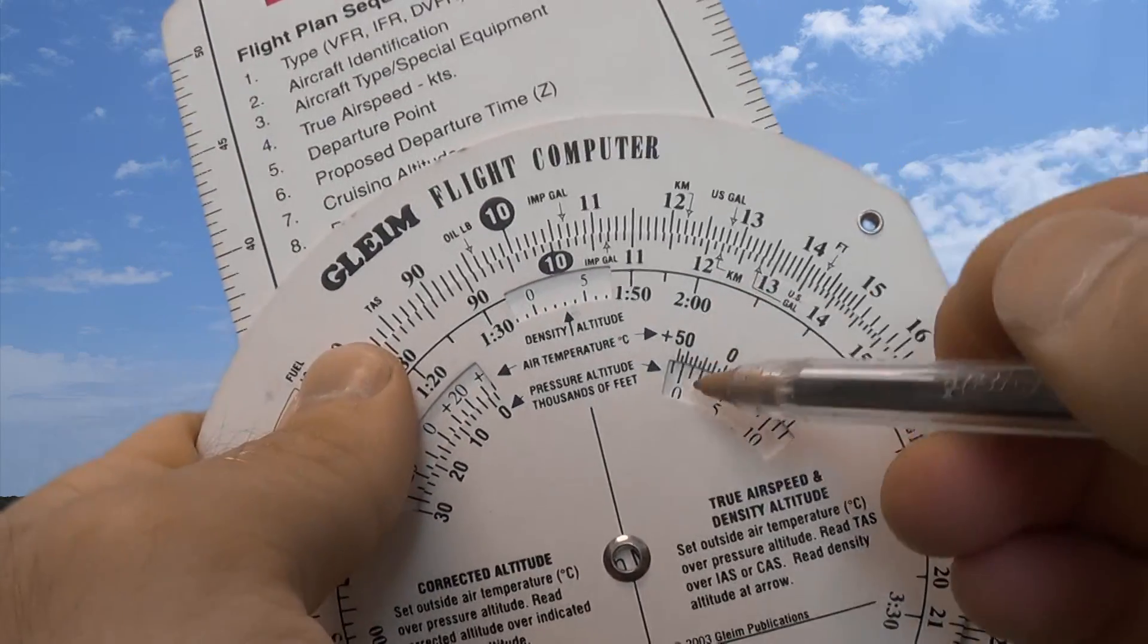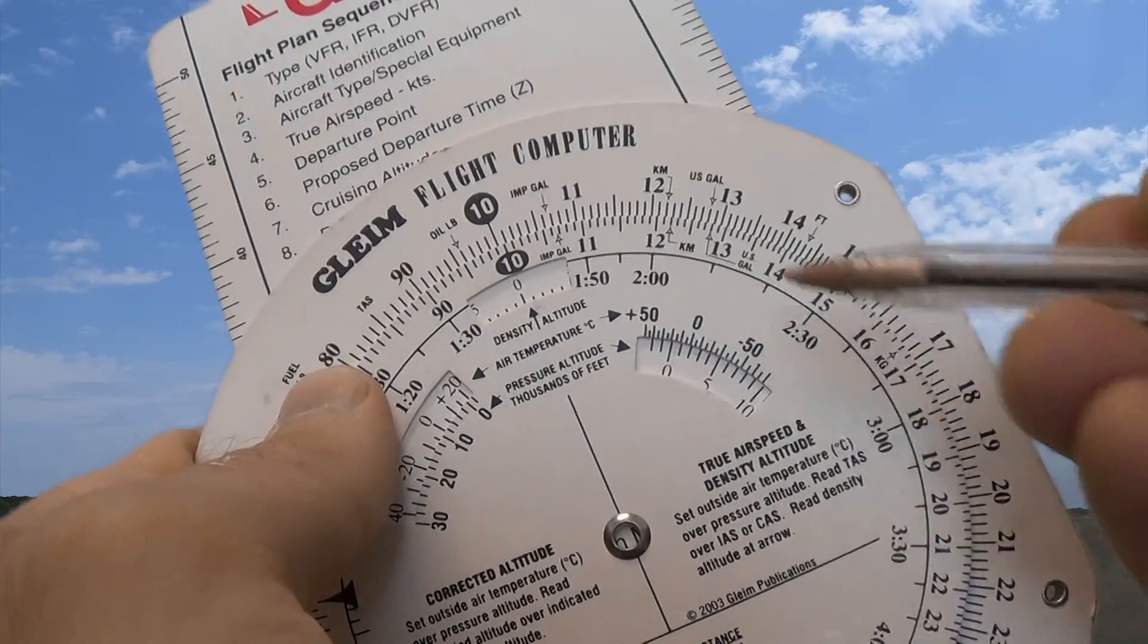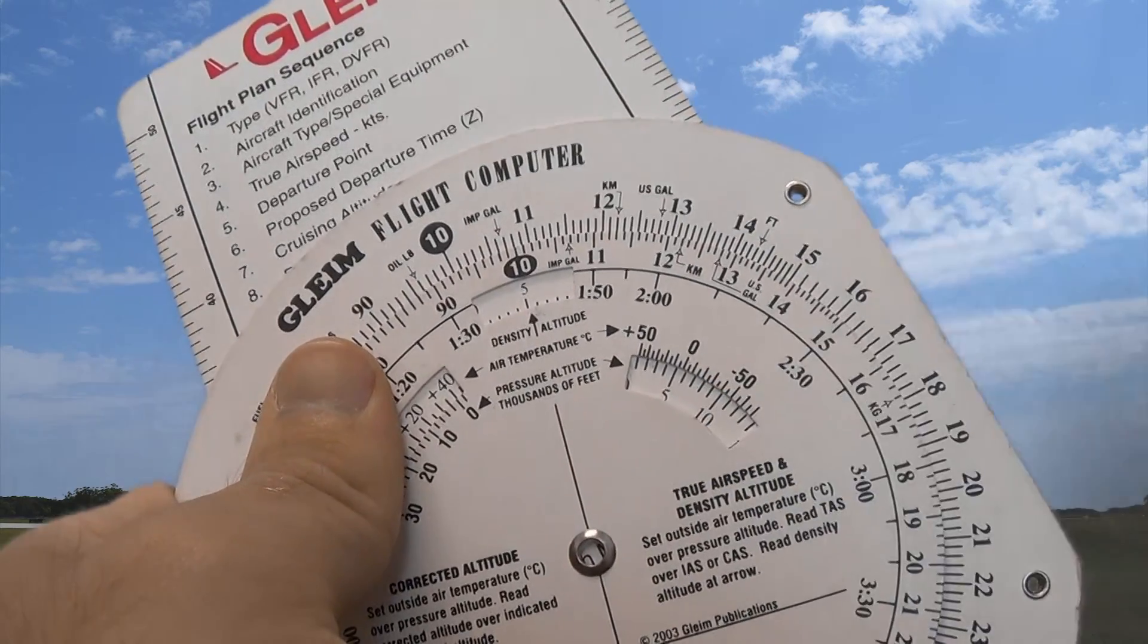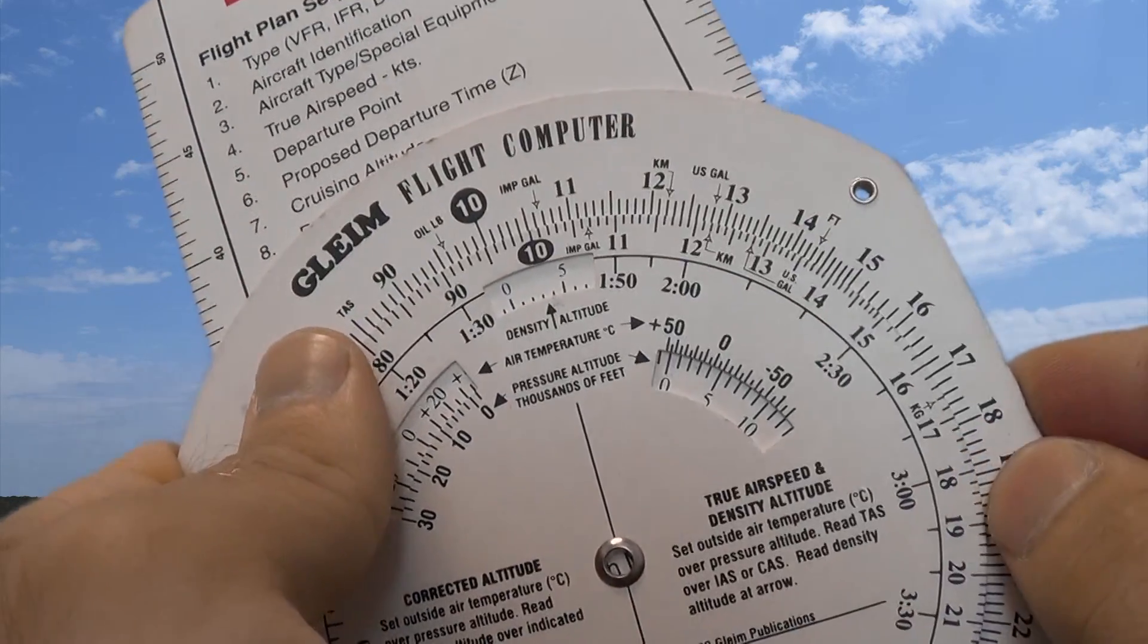So as long as we have two of these things, we can find the third one. Very simple to do, you're just lining up these two lines or lining that up on your density altitude and then finding where that other line intersects the other one to find all three items there, as long as you have two givens.